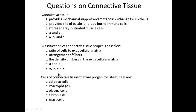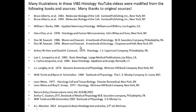Classification of connective tissue proper is based on the ratio of cells to extracellular matrix — true. Arrangement of fibers (regular/irregular) — true. The density of fibers and extracellular matrix — true. The answer is E: A, B, and C — all three are used to classify connective tissue. Cells of connective tissue that are progenitor or stem cells: adipose cells — no. Macrophages — no. Plasma cells — no. Mast cells — no. All those are end cells. The only progenitors are fibroblasts, especially the mesenchymal cells of fibroblast-like structures.